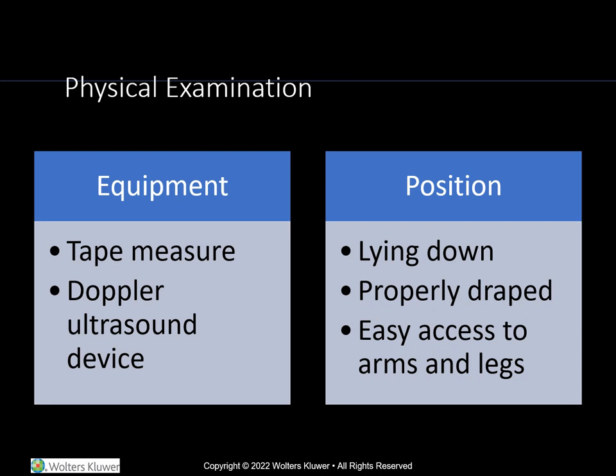Certain equipment you may need for peripheral vascular or lymphatic assessment is a tape measure for measuring the circumference of an edematous extremity for comparison purposes, or a Doppler ultrasound to help with locating non-palpable pulses. Lying down, if possible, may be helpful to view and assess arms and legs. Remember to drape the patient to ensure privacy.